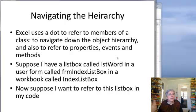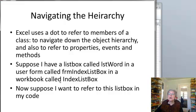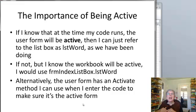When you're working with the hierarchy, Excel uses a dot to go from one level of the hierarchy to the next, and also to refer to things like properties, events, and methods. Suppose I have a list box called "listWord" and it's in a user form called "formIndexListBox," which is from one of my actual examples, and it's in a workbook called "indexListBox." If I want to refer to this list box in my code, as we've been writing code, we've just written the name of the list box — "listWord" — and that's fine as long as we know the form that contains it will be active.